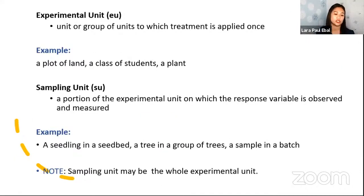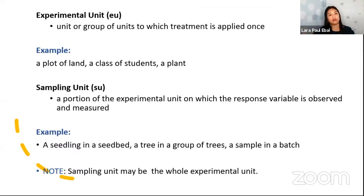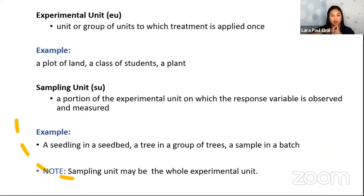Another term is experimental unit, or EU — the unit or group of units to which a treatment is applied once. You know your treatment level and you apply it to a subject or unit; we call that the experimental unit. Examples include a plot of land, a class of students, a plant, a tree, a dish, a flask, or a test tube in the laboratory.